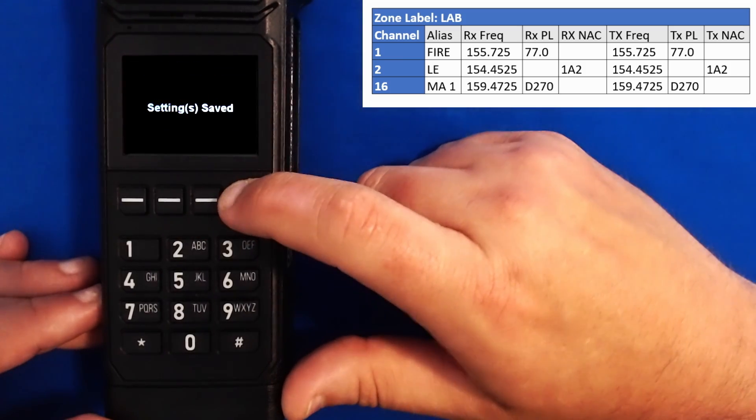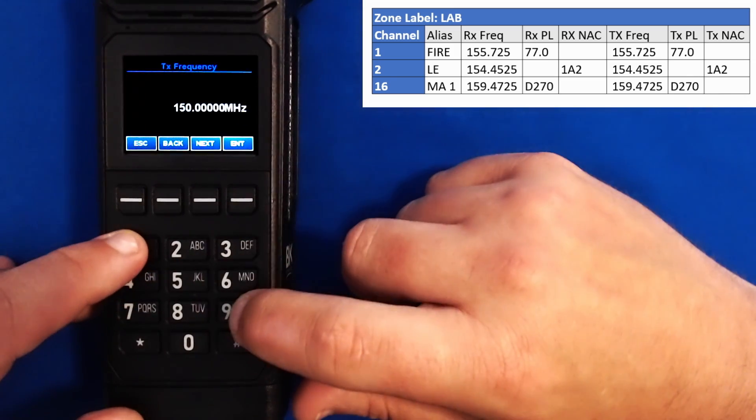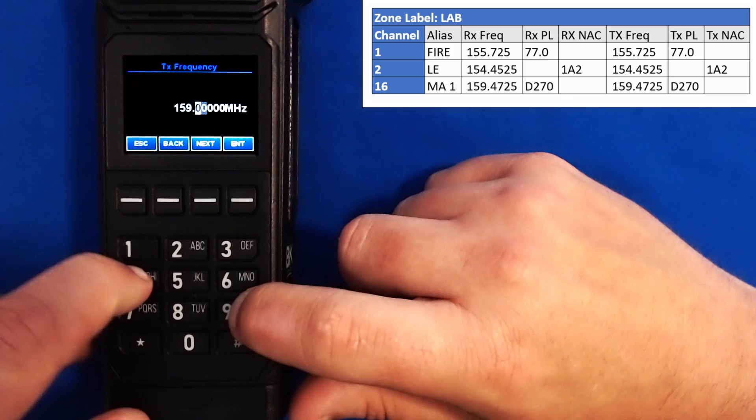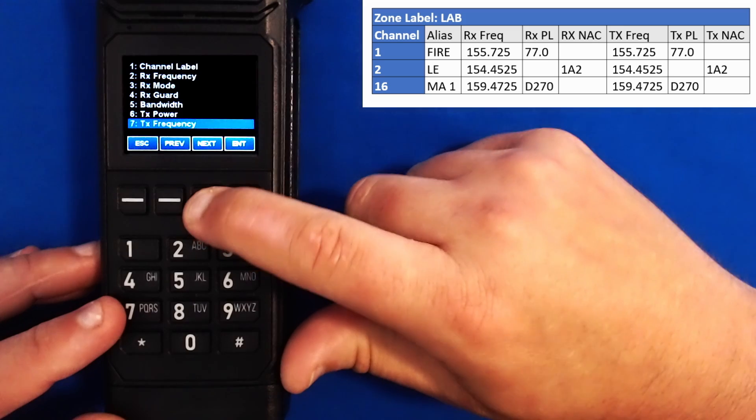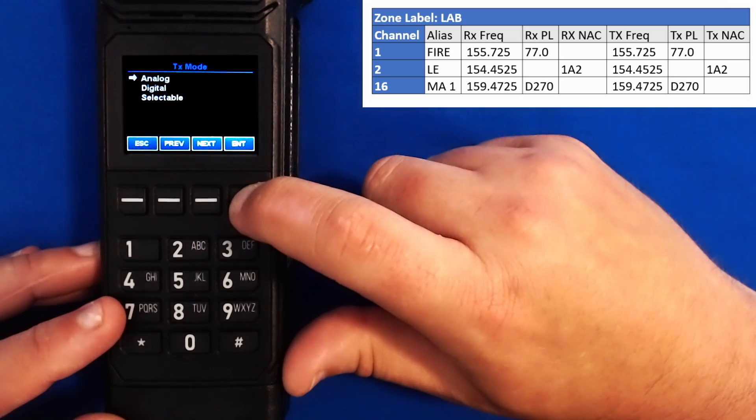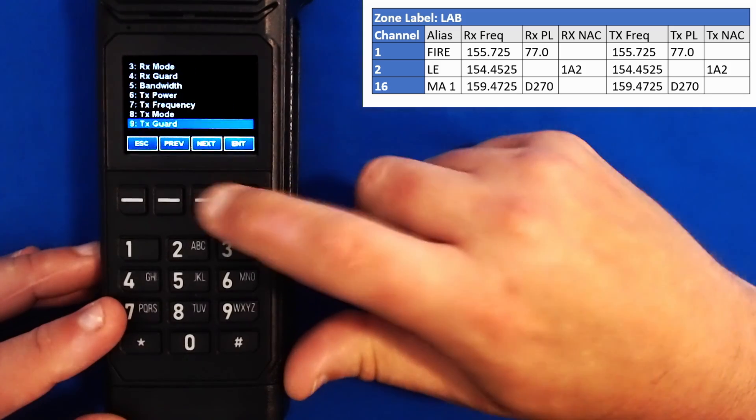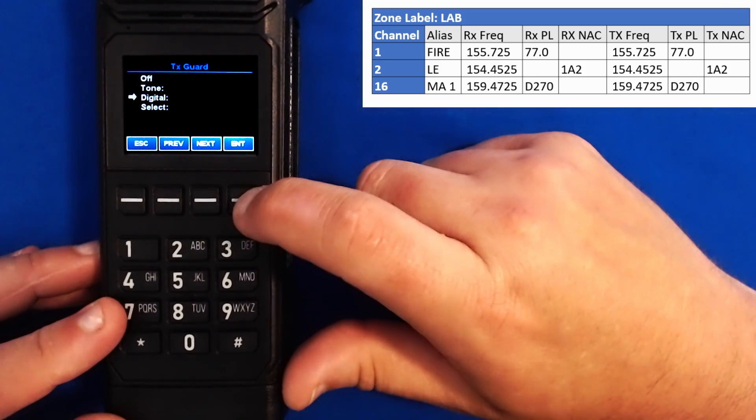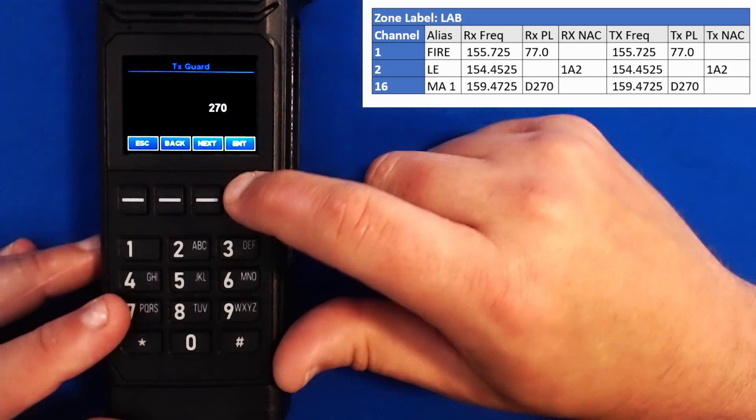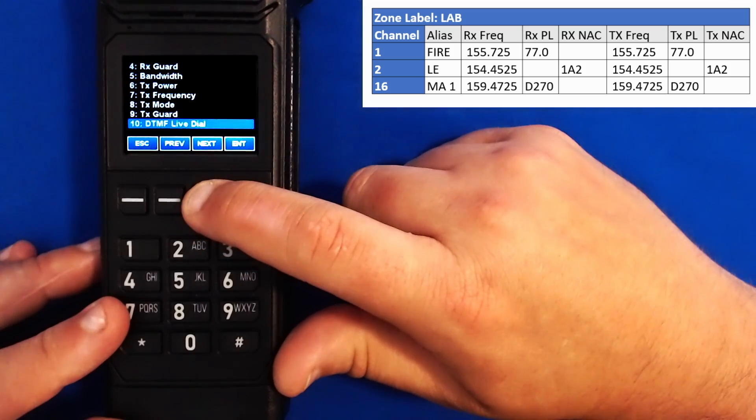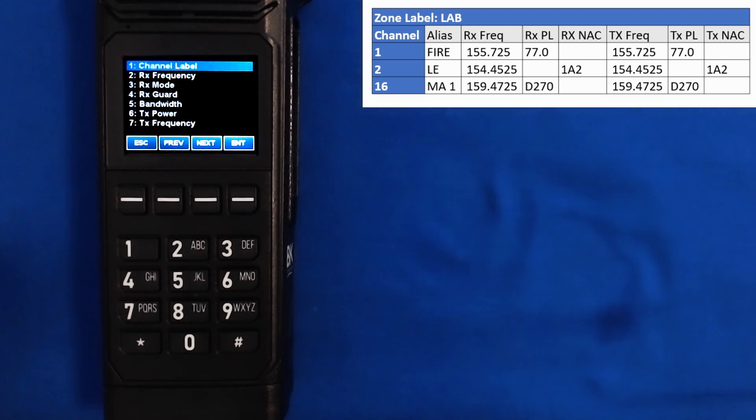Transmit power, high is good. Transmit frequency, we'll clear this out. 159472. Enter. We'll go down to my transmit mode. I have a PL tone. Even though it's a DPL, that means I'm analog. I'm going to go down my tone guard, select digital. 270. DTMF live dial is okay. I hit next. I'm back to channel label. I am now done programming my radio.